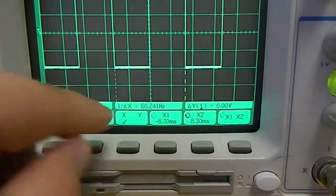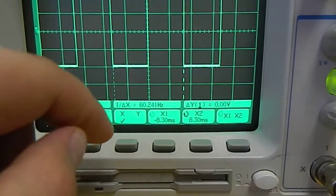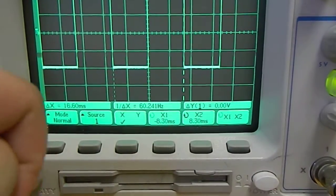And what you can see is that it also measures 1 over delta X, so this delta X is a period, 1 over delta X is a frequency, and it measures it at right about 60 hertz.